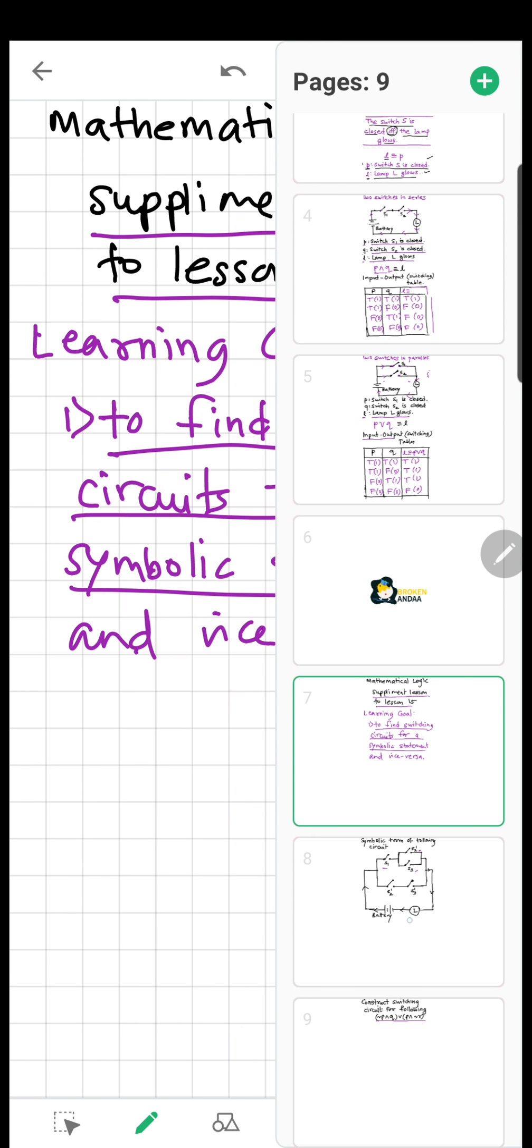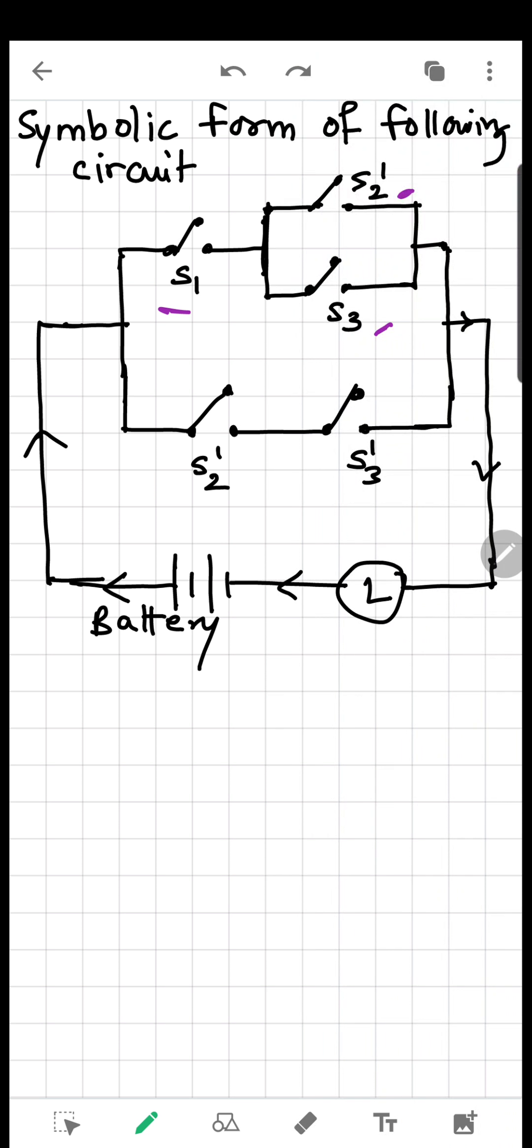We are going to see examples here. Here we have to find the symbolic form or symbolic statement for the given circuit. Let's see how many switches are there. Here we have S1, we have S2 and we have S3.